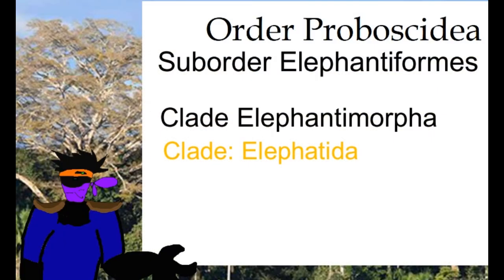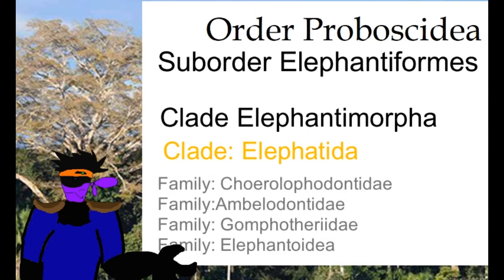Elephantita is the other half of the Elephantomorpha. We discussed the Mastodontidae last time — they were the other half. There are four groups in this clade: Cholophodontidae, Amilodontidae, Gompotheriidae, and Elephantoidea.